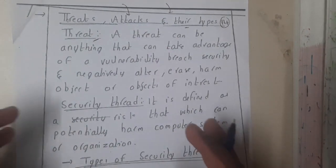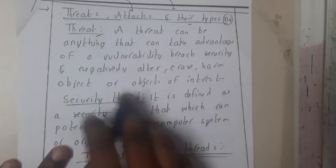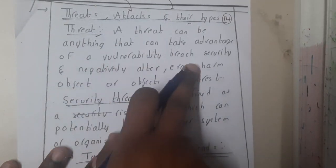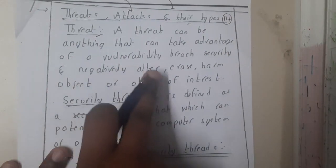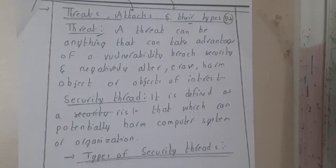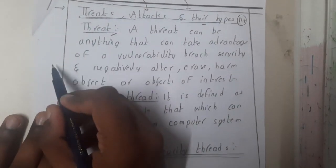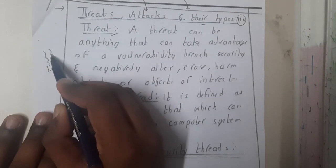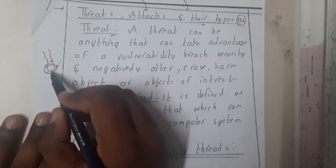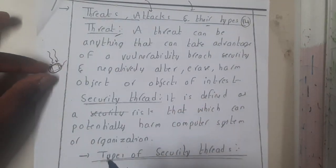First, let us go through what a threat is. A threat can be anything that can take advantage of a vulnerable breach, either security neglect, error, or harmful objects of interest. Basically, a threat is some kind of danger. By using these threats, hackers can enter your system to grab your data, damage your system, delete your files, get your browsing history — they can do anything they want.